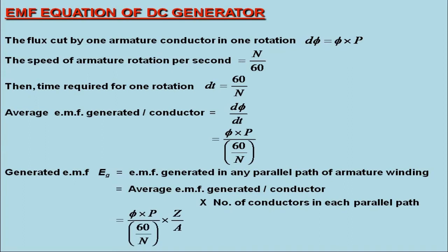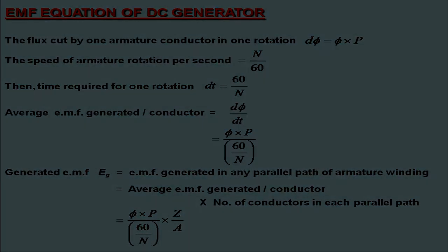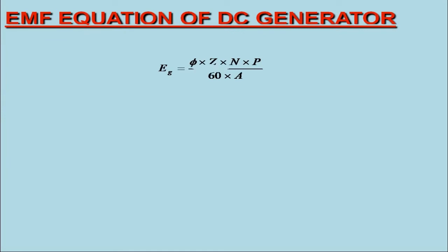We have already calculated the average EMF generated per conductor as φP/(60/N). On the other hand, dividing the total number of armature conductors with total number of parallel paths would result into the number of conductors in each parallel path. Thus, we have the equation for generated EMF as Eg = φZNP/60A.